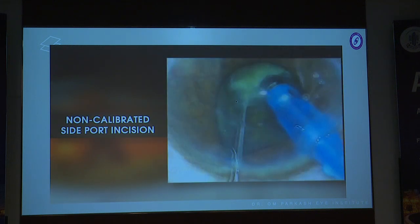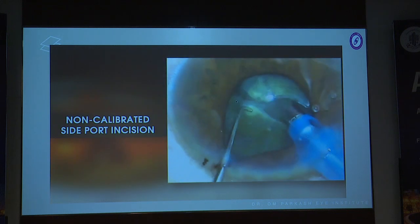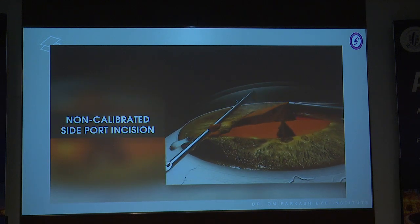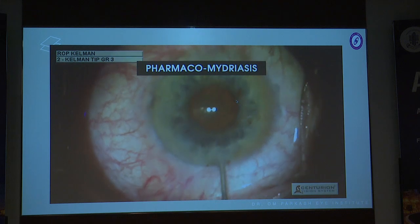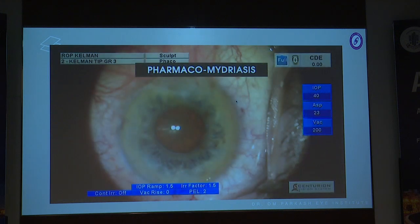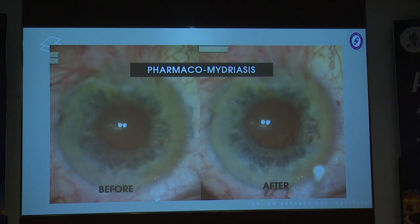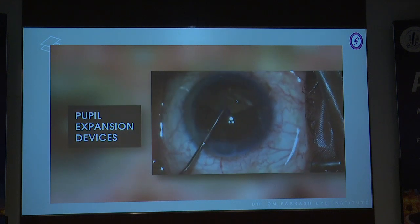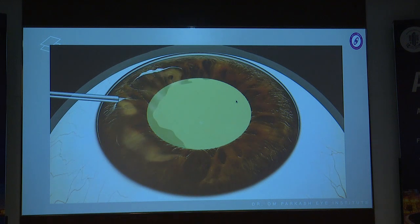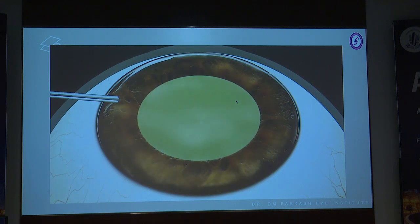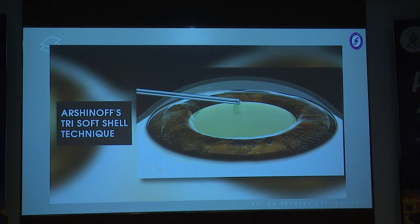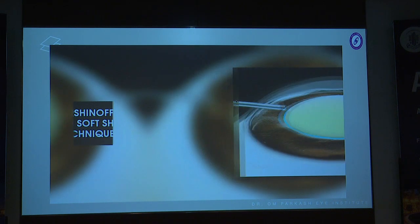Non-calibrated side port incision causes IFIS through disproportionate efflux of fluid, unstable anterior chamber, excess fluid to the posterior aspect of iris, and iris prolapse. Intracameral epinephrine is used to dilate the pupil — it is more effective in the early stage when receptors are blocked. In dilated pupil size less than 4.5mm, a dilating aid can be easily used. Viscodispersive OVD is injected over the sub-incisional iris, followed by injection in the remaining part. The Arshinoff Tri-Softshell technique uses viscodispersive over the iris and viscocohesive in the pupillary area.